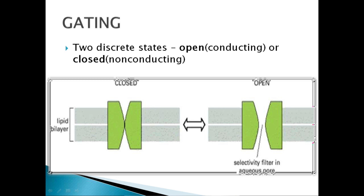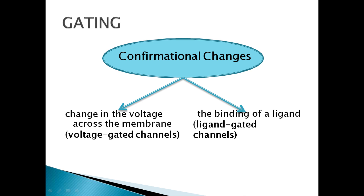The gating of the ion channel has two discrete states: open state and closed state. As visible in the diagram, the open state conducts ions and the closed state does not. This gating involves conformational changes in the environment. If these changes occur in the voltage across the membrane, it is called a voltage-gated channel. If gating takes place due to the binding of a ligand, it is called a ligand-gated channel.